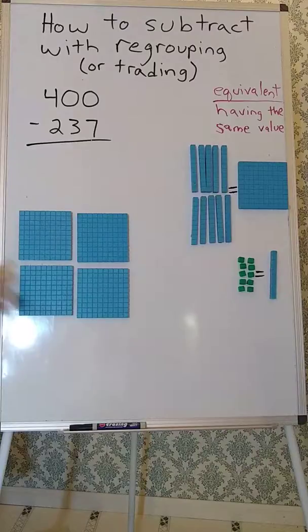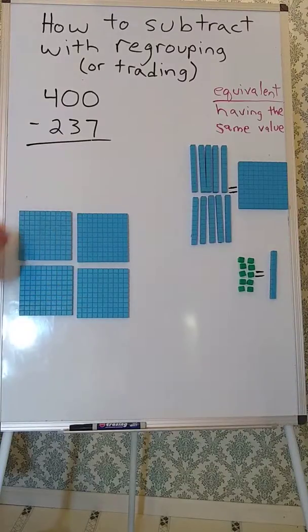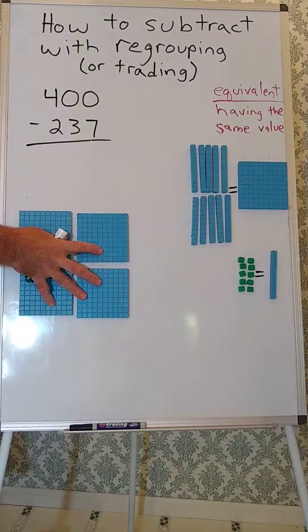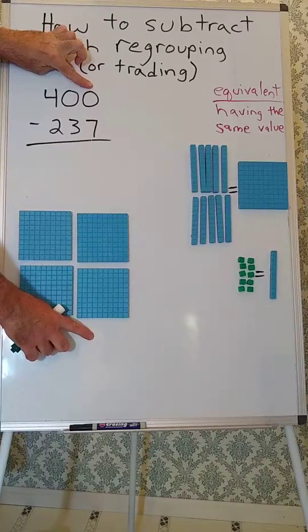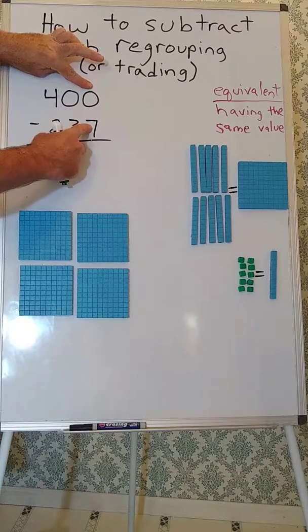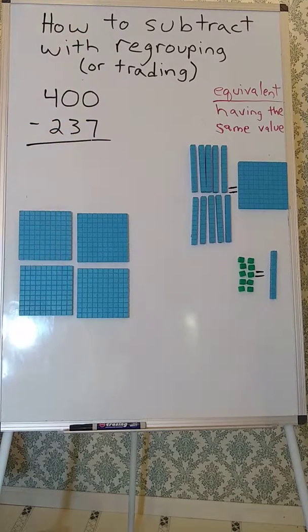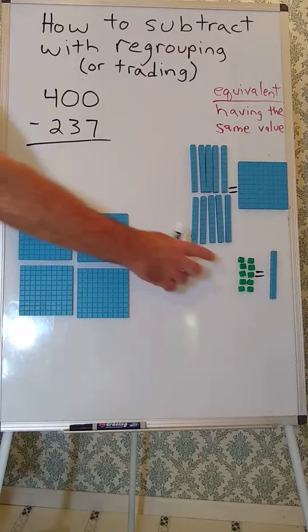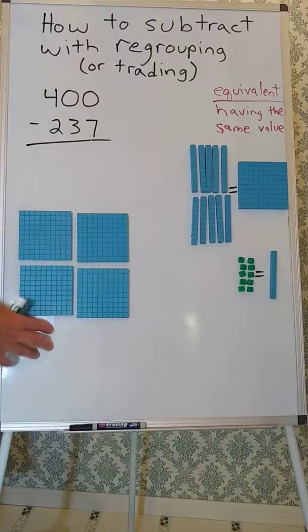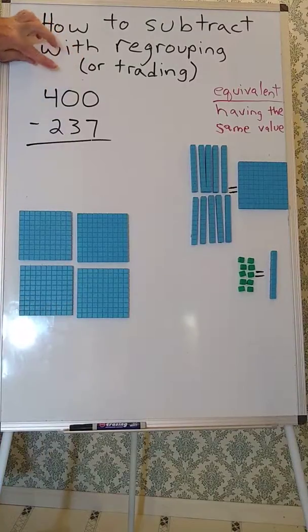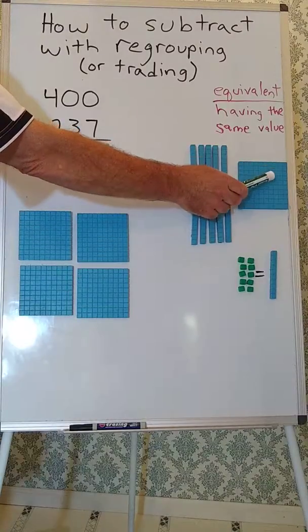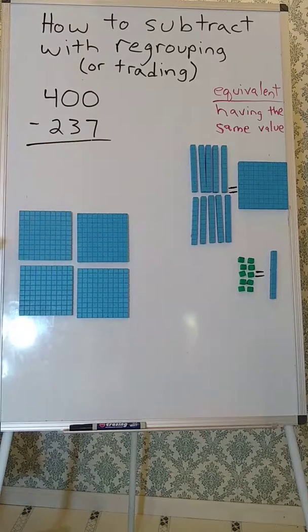Okay, so let's begin. Here we have 400, and we're going to start in the ones place. You see we have 400s, but we have 0 tens and 0 ones. The problem says we need to take away 7 ones. So we don't have any ones, so we can't do that. We could trade a 10 for 10 ones, but we don't have any 10s. So we need to get 10s. We can trade a 100 for 10 tens. Let's do that.